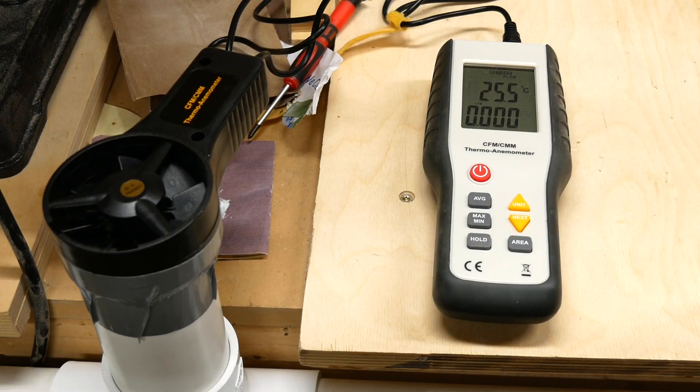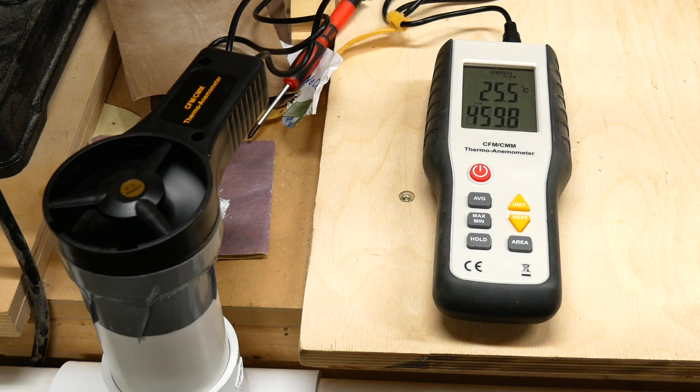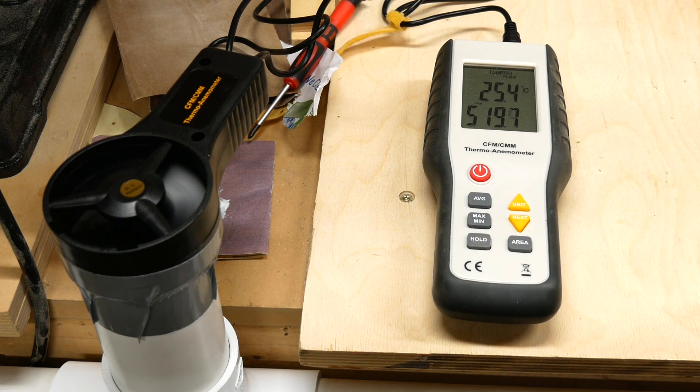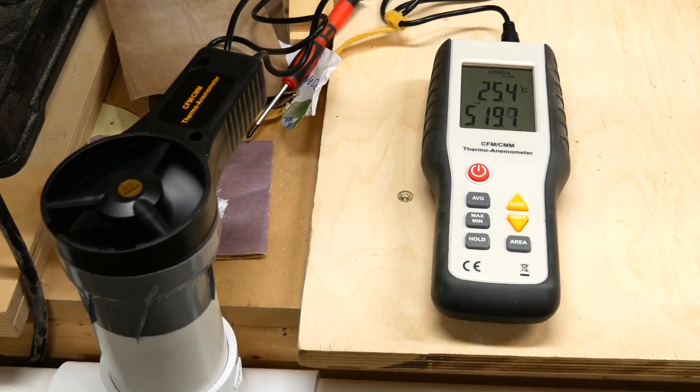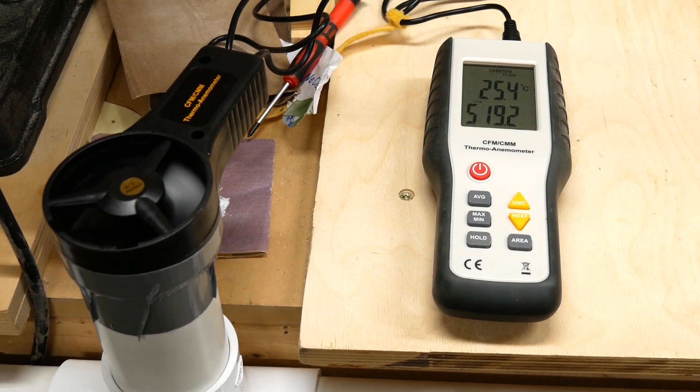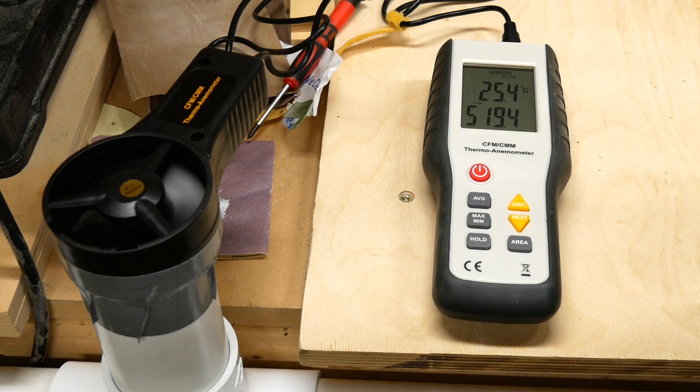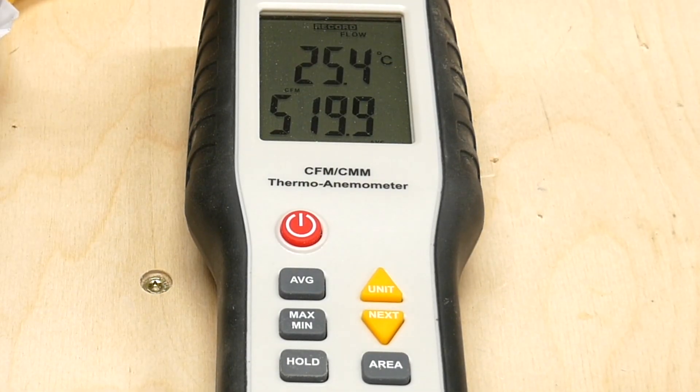So here's the T. And let's turn on the average function. I've got the anemometer set up to show CFM, but the value it's showing isn't the actual cubic feet per minute, because I didn't enter the area being measured. And that's because I couldn't figure out how to enter the area into the anemometer.